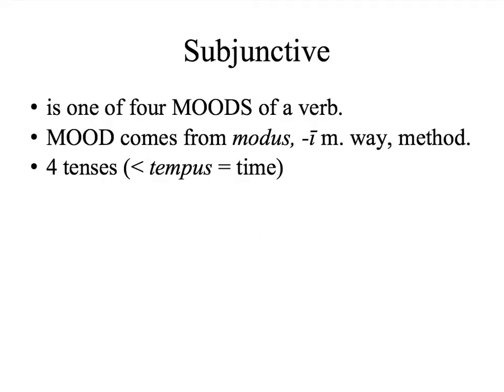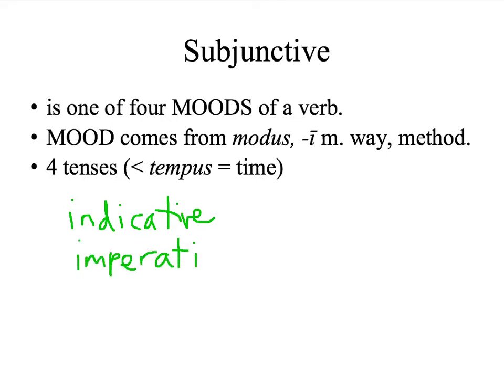Subjunctive is one of four moods of a verb. The word mood comes from the Latin word modus, which means a way or a method. There are four tenses in the subjunctive mood. You have already learned the indicative mood, which is the way to express facts in Latin. You have also learned the imperative mood, which is a way to express commands.